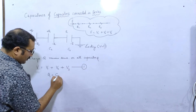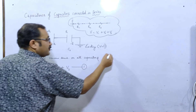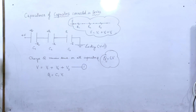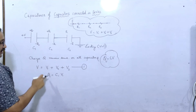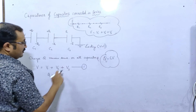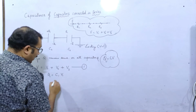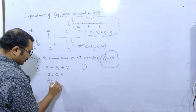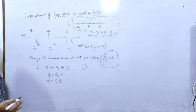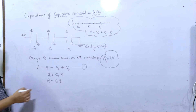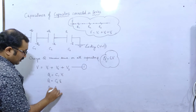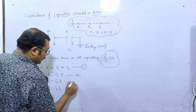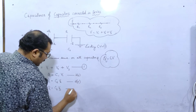Basic formula Q = C × V use हो रहा है। तो: Q = C1 × V1, Q = C2 × V2, Q = C3 × V3 — इन्हें हम equations 2.1, 2.2, 2.3 कह सकते हैं। इनमें से हम बारी-बारी V1, V2, V3 की values निकाल कर substitute करेंगे।